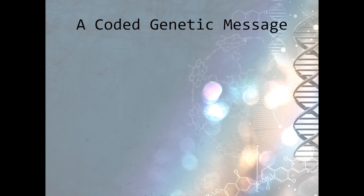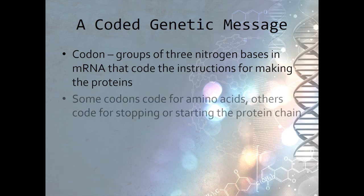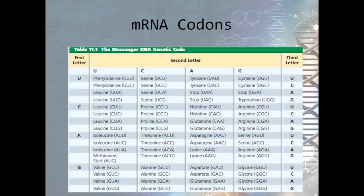The message carried by mRNA doesn't just tell us the sequence of DNA bases. It's actually a series of codons. Codons are groups of three nitrogen bases that code the instructions for building the protein. The codons are arranged in specific sequence for a particular protein. Some of the codons code for amino acids, while others code for starting and stopping the protein chain.